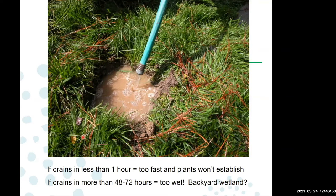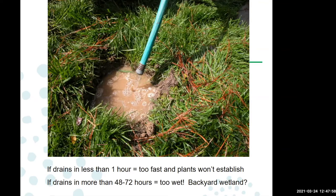To do a percolation test, dig a 12-inch-deep hole, fill it all the way up, and let it drain completely. Then fill it up again once the soil is saturated, and see how fast the water drains out that second time. If it drains in less than an hour, that's too fast — you're basically on sand. You're looking for it to drain within 24 to 48 hours. If it takes 48 to 72 hours or more, it's too wet — you could consider doing a bog or wetland garden instead.